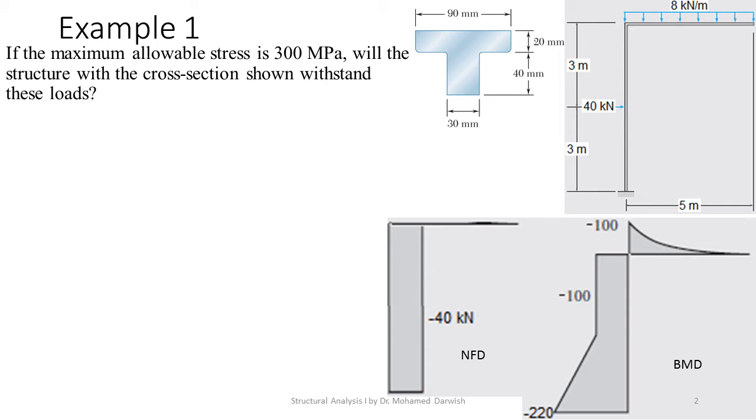This is our moment and this is our normal force. Then we should calculate the section properties because this section is not a standard section. It's not a rectangle, it's not a standard I-beam or standard C or whatever, so we don't know the I. We'll have to divide the section into two rectangles, rectangle number 1 and rectangle number 2, in order to calculate the area of each.